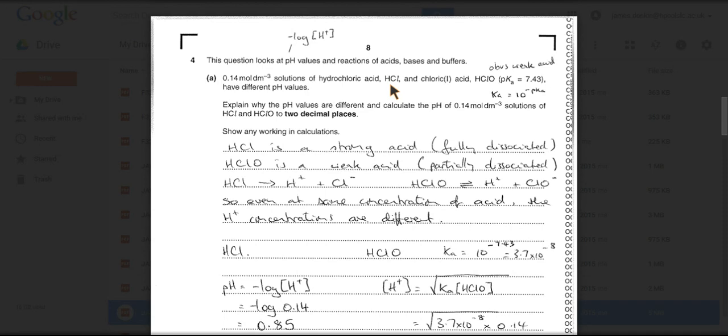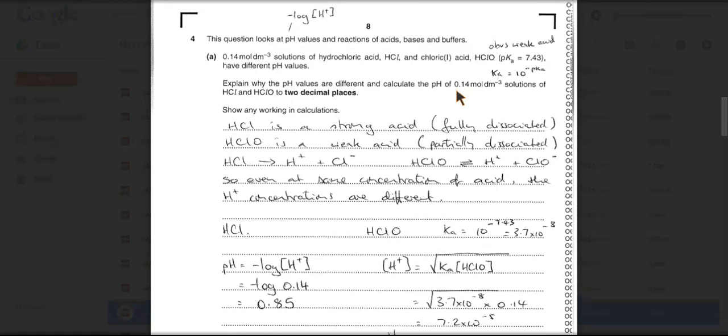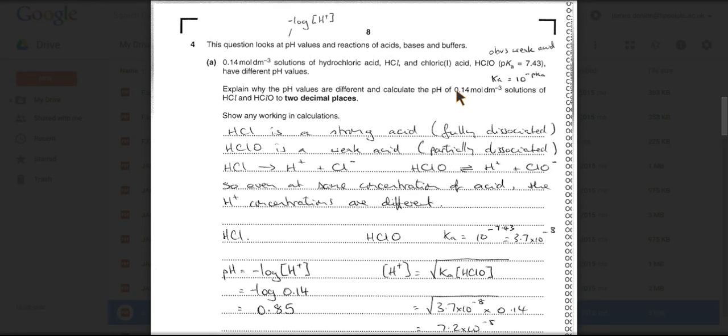HCl is a strong acid and HClO, we can tell from the pKa that's being given, that's obviously a weak acid. So there's a bit of a clue there in the question.